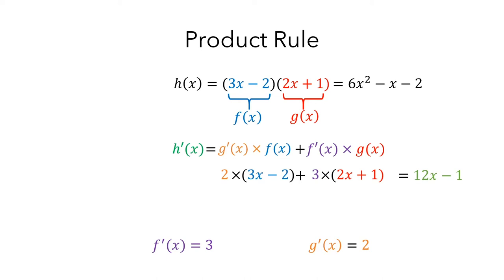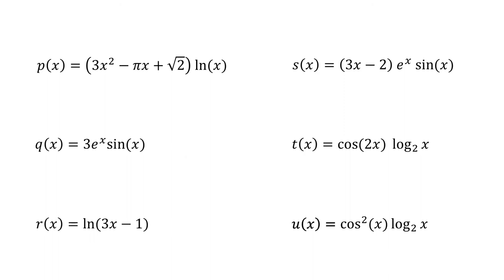I'll show you a couple more examples. Here are six functions that we'll look at as examples. The first thing to do is to recognize when you can and can't use the product rule — that is, when the function is made up of two other functions that are multiplied together. Take a minute to look at each of these and decide for which ones you could use the product rule to compute their derivative.